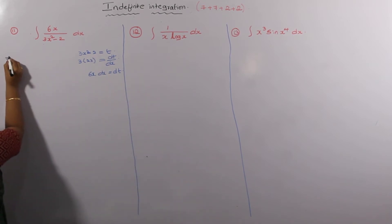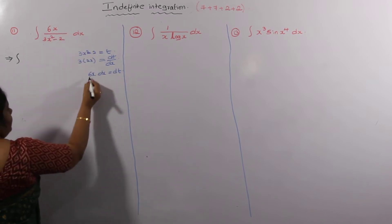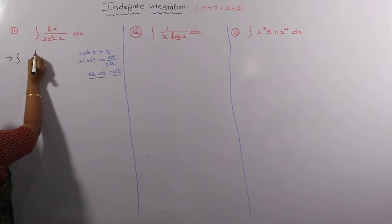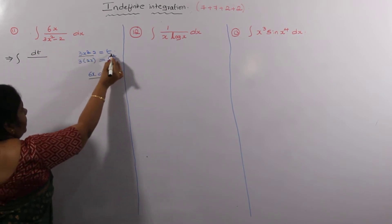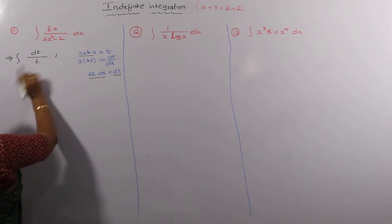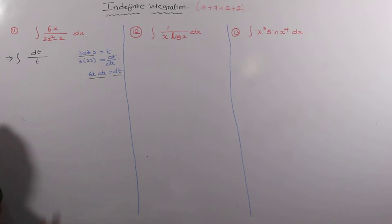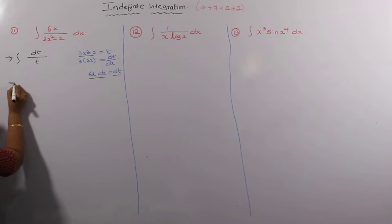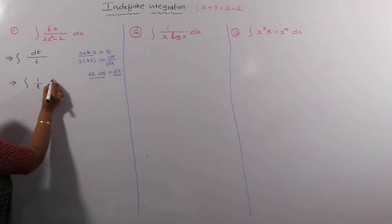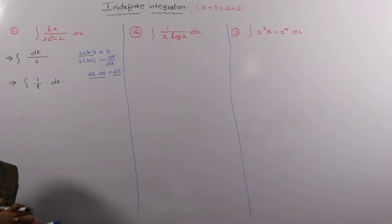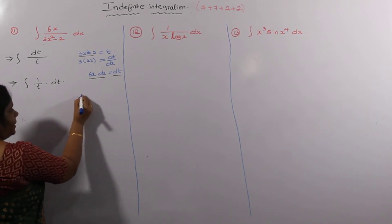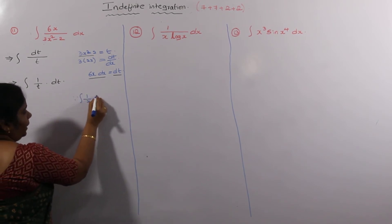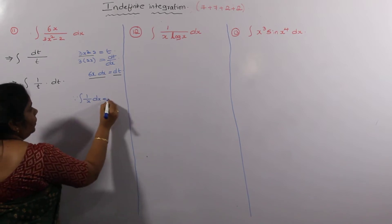That implies the integral of 6x dx divided by (3x² - 2): since 6x dx equals dT and 3x² - 2 equals T, this becomes the integral of dT/T, which can be written as the integral of (1/T) dT. We have the formula: integral of (1/x) dx.